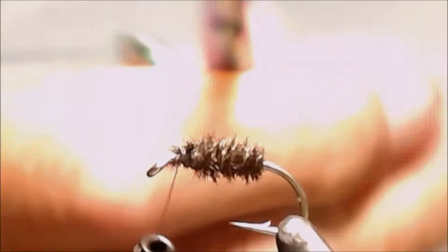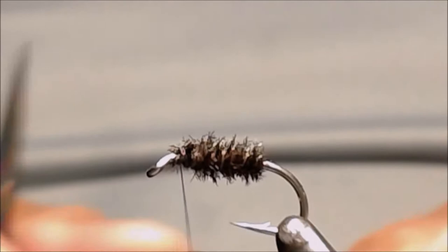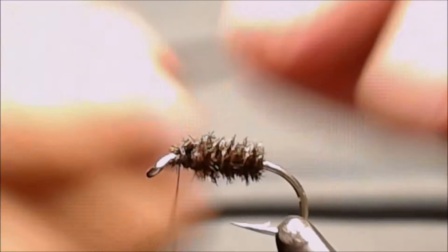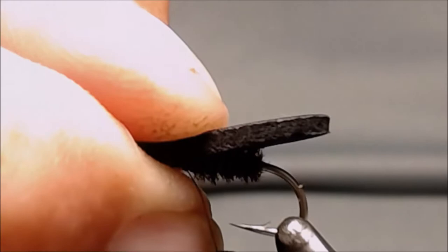For the back shell of the cricket, we're going to use a 2-millimeter piece of black foam that we've shaped, which is about a gap. We'll lay it on with just a tad bit of the foam over the back of the body, back of the bend.